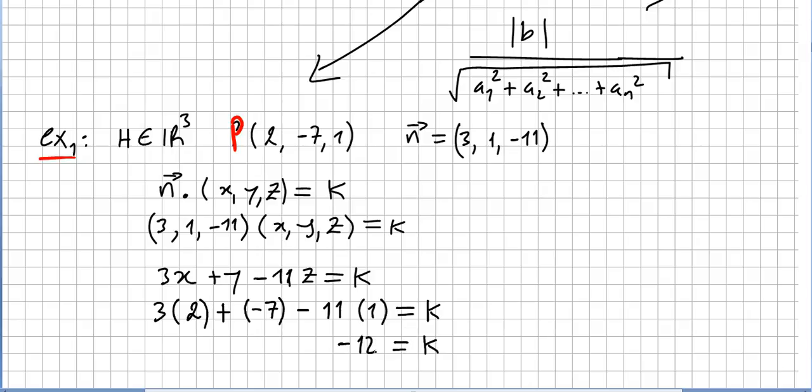K equals -12, so the hyperplane equation will be 3x + y - 11z equals -12. Here we are. So that will be the hyperplane or the equation of the hyperplane with this normal and passing through this point.